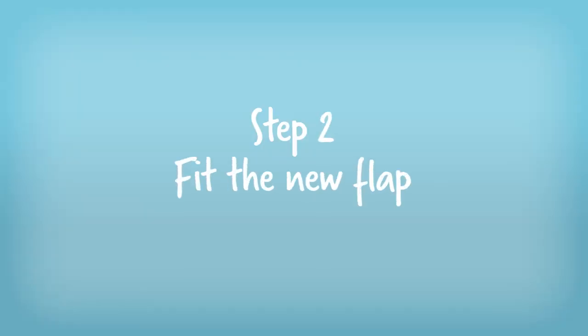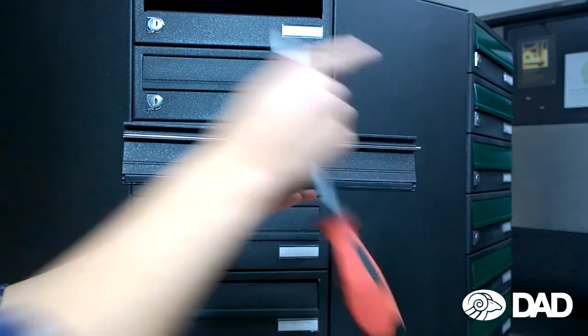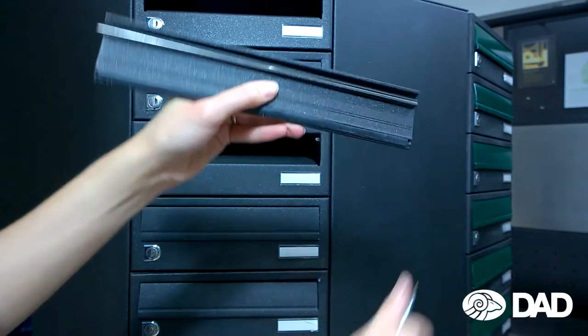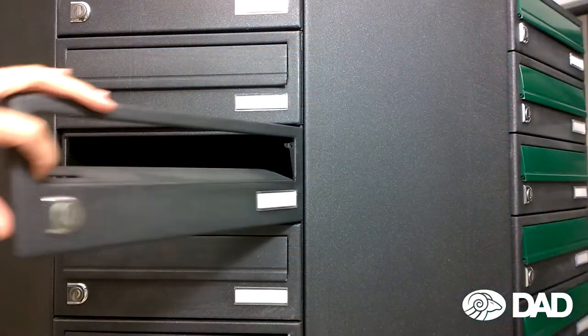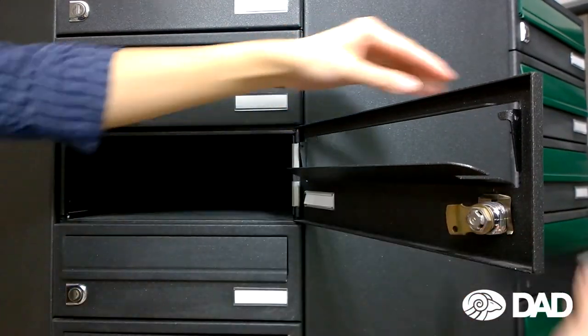Step 2. Fit the new flap. Make sure that the bar is situated on the left side by pushing the bar with the screwdriver. Then, after opening your mailbox, you can insert the flap from the outside.